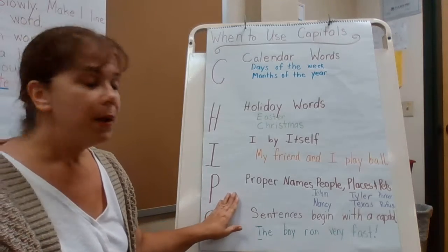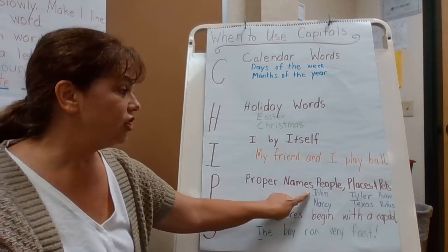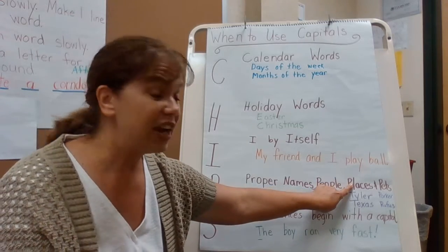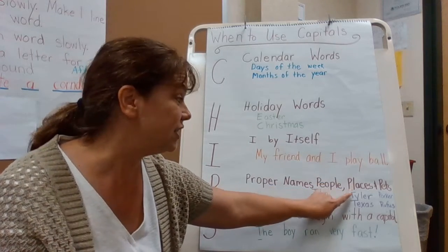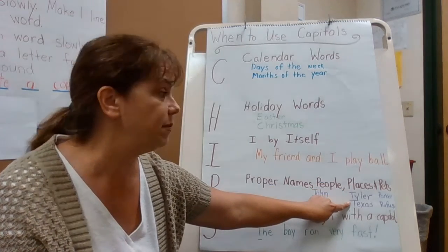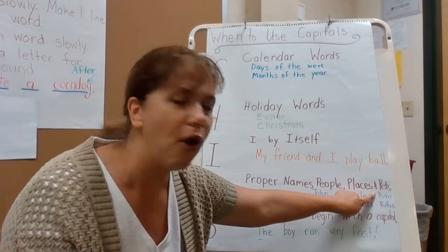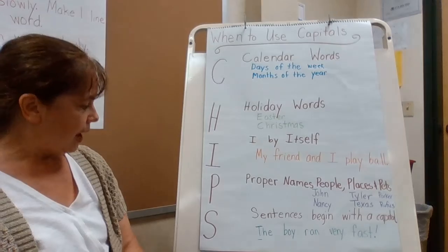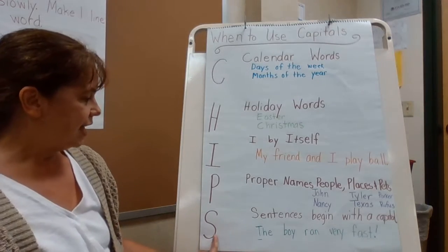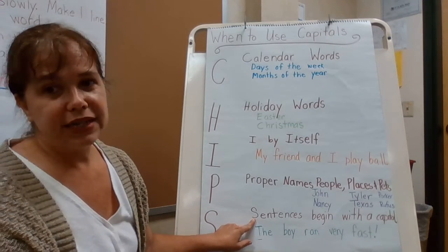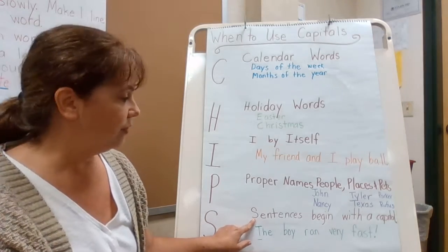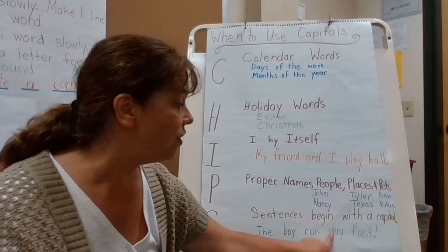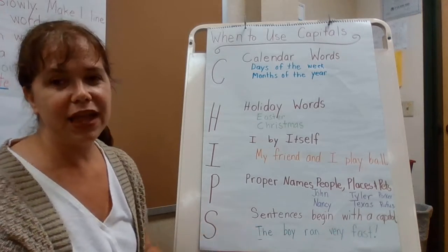And of course, proper nouns, like John and Nancy, are capitalized. Places that are specific, such as Tyler in Texas, are capitalized. And of course, pets like Parker and Rufus, those are capitalized. Now the last letter, the S — we already know this in second grade. All sentences begin with capital letters. Always. Like, the boy ran very fast. Always begin with a capital letter.